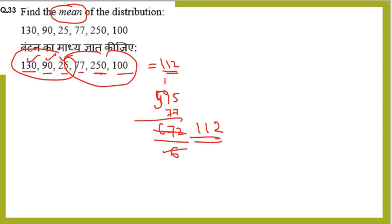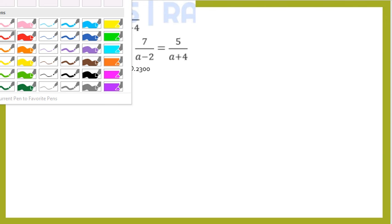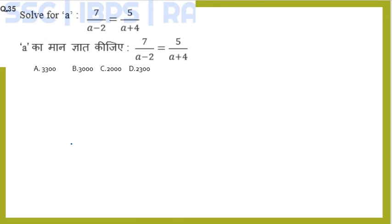Question 35: Solve for 'a'. The equation is 7/(a-2) = 5/(a+4). This is a simple problem. We need to cross multiply.